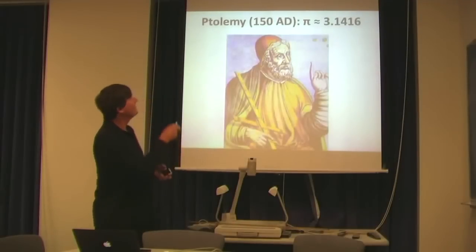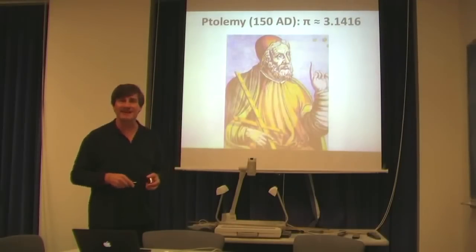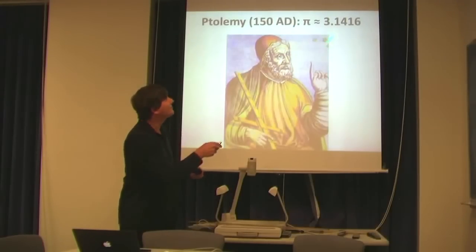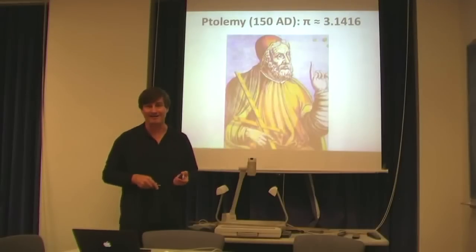400 years later, Ptolemy, around 150 AD, used essentially the same technique to come up with a better approximation to pi: 3.1416.